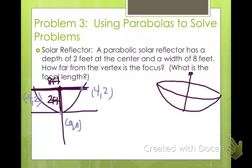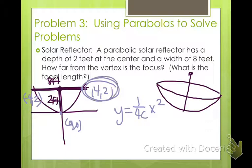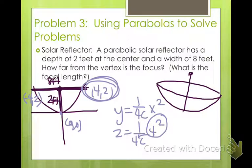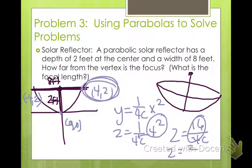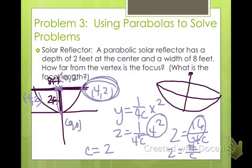We can use the point (4, 2) in our formula y = 1/(4c) x². Plugging in: 2 = 1/(4c) times 16, which gives 2 = 16/(4c), then 2 = 4/c, so c = 2. Our focal length is 2 feet, which means the focus is at the point (0, 2) — right at the center depth of the reflector. The focus is 2 feet from the vertex.